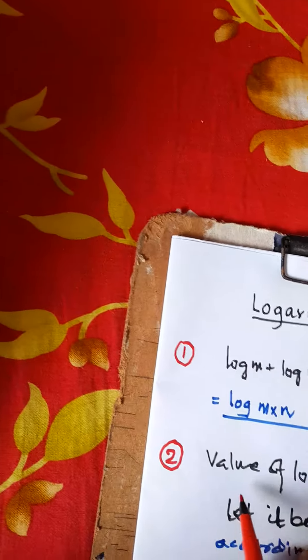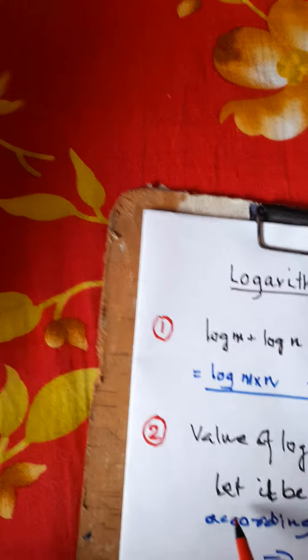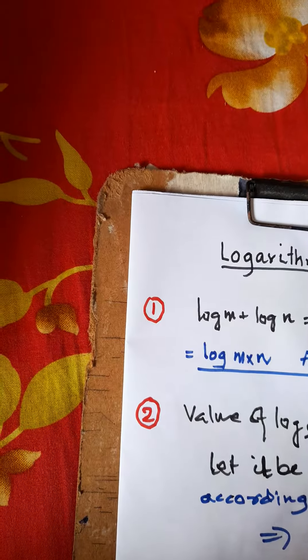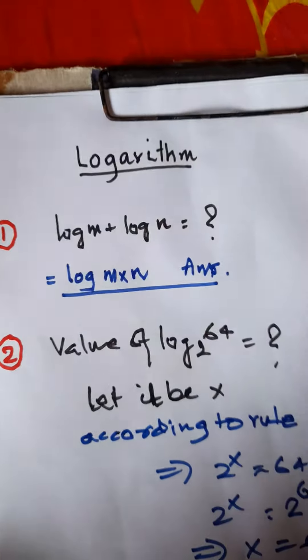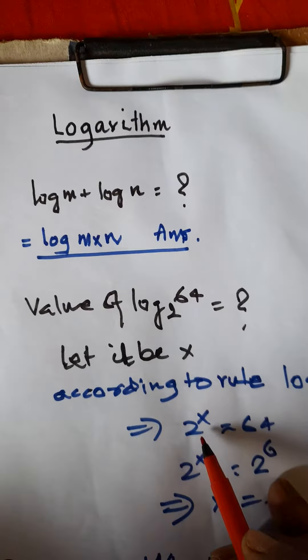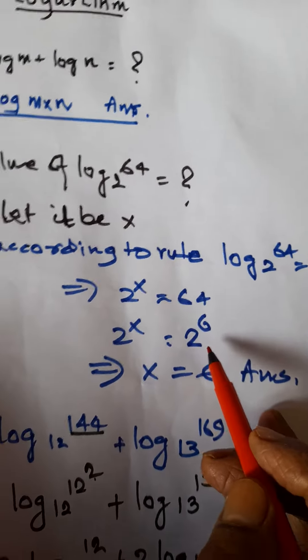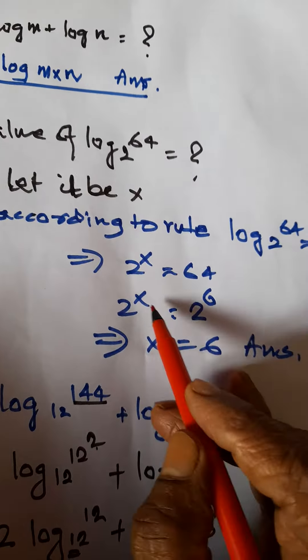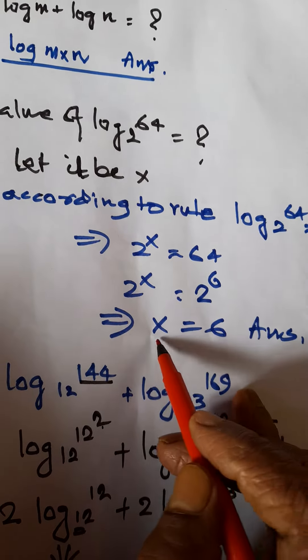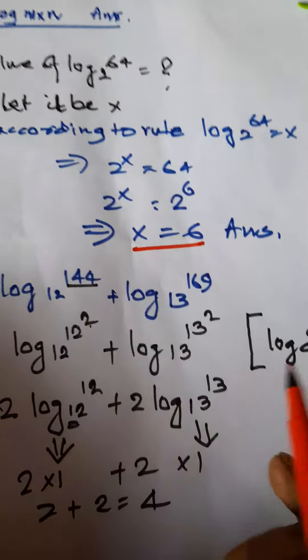The second question: what is the value of log base 2 of 64? Let it be x. According to the rule, log₂64 = x implies that 2^x = 64, which equals 2^6. Since the bases are equal, the exponents are also equal, so x equals 6.